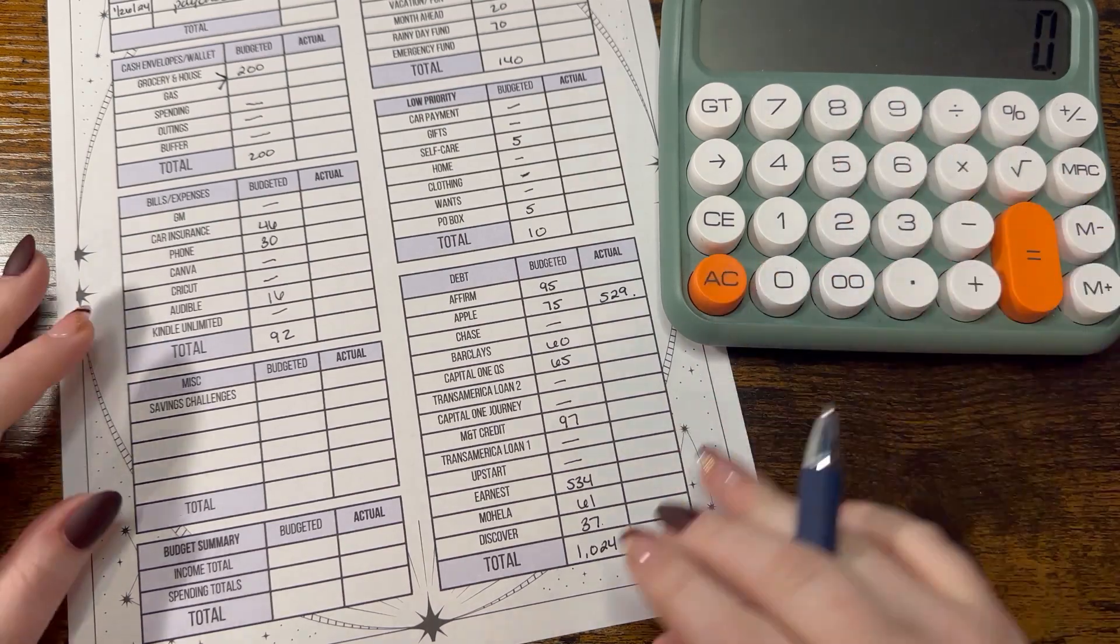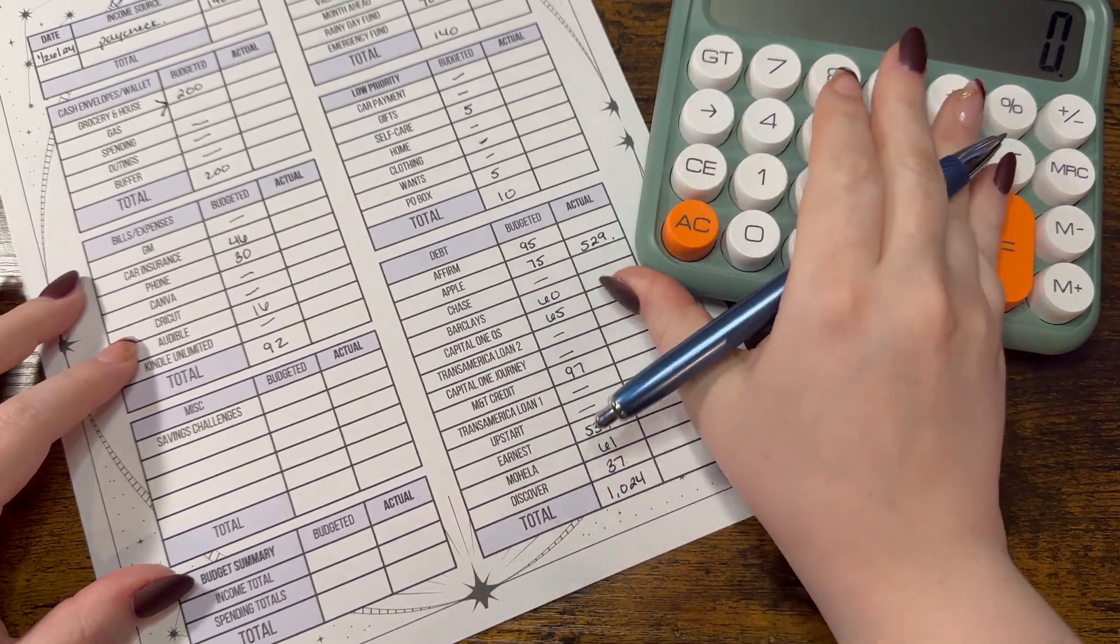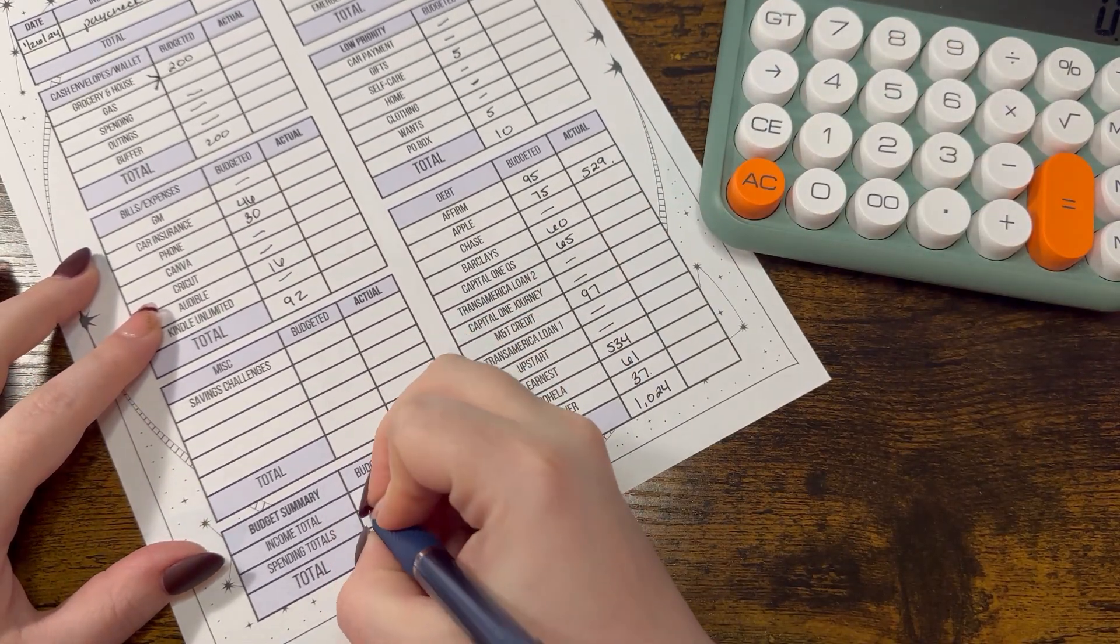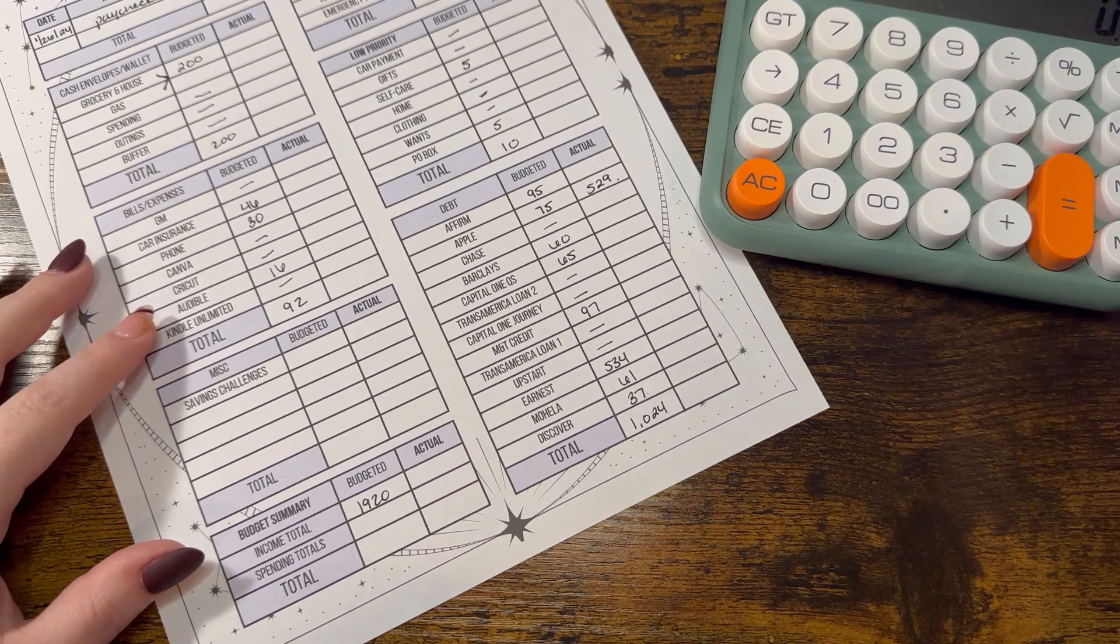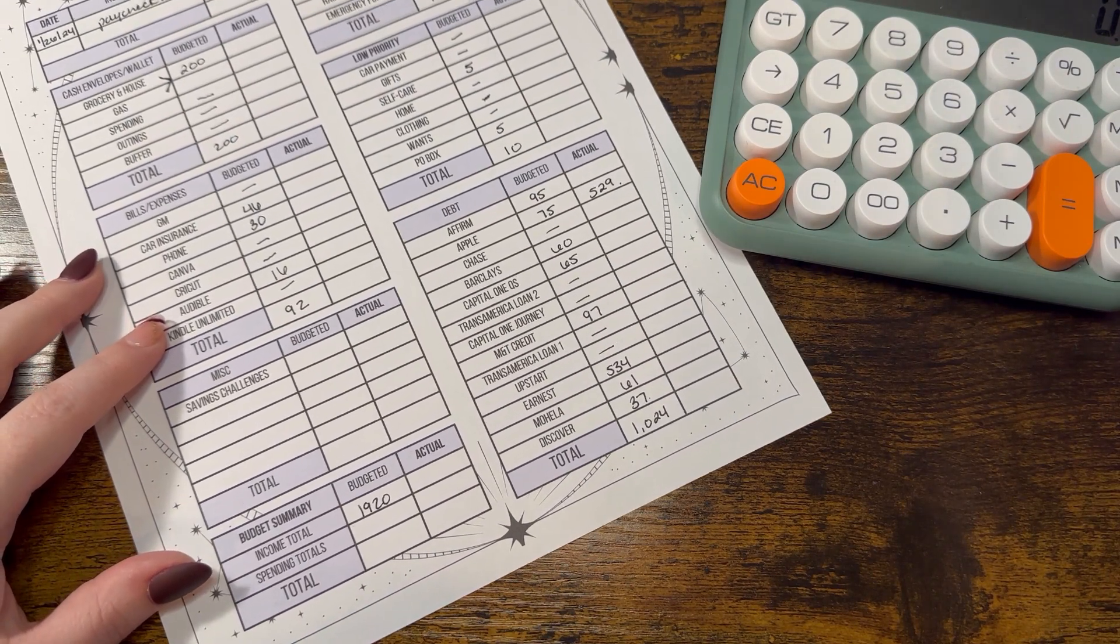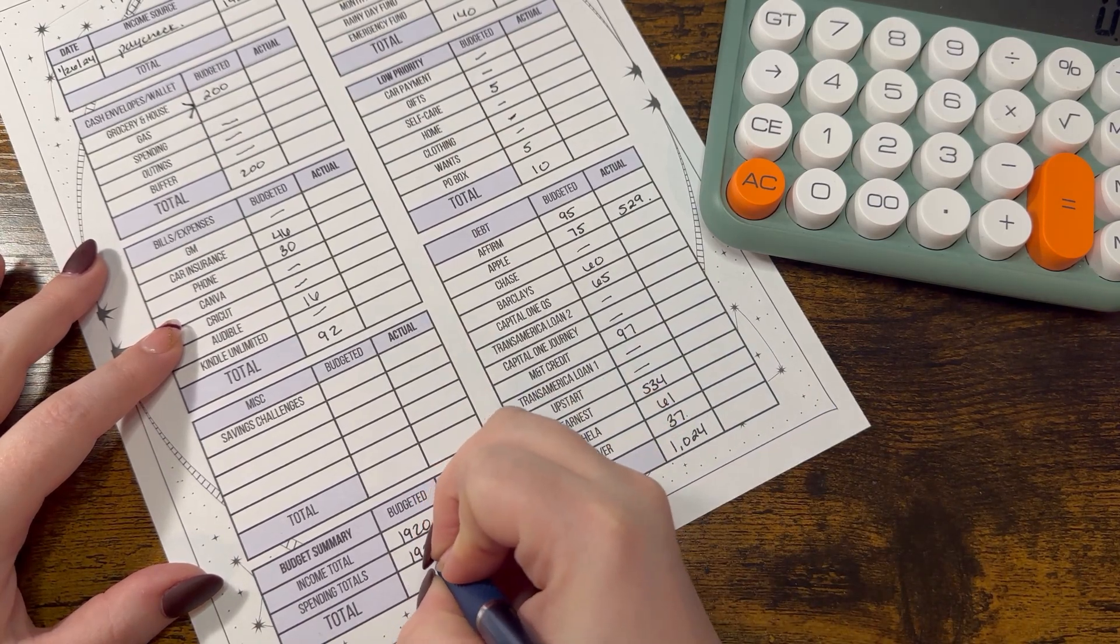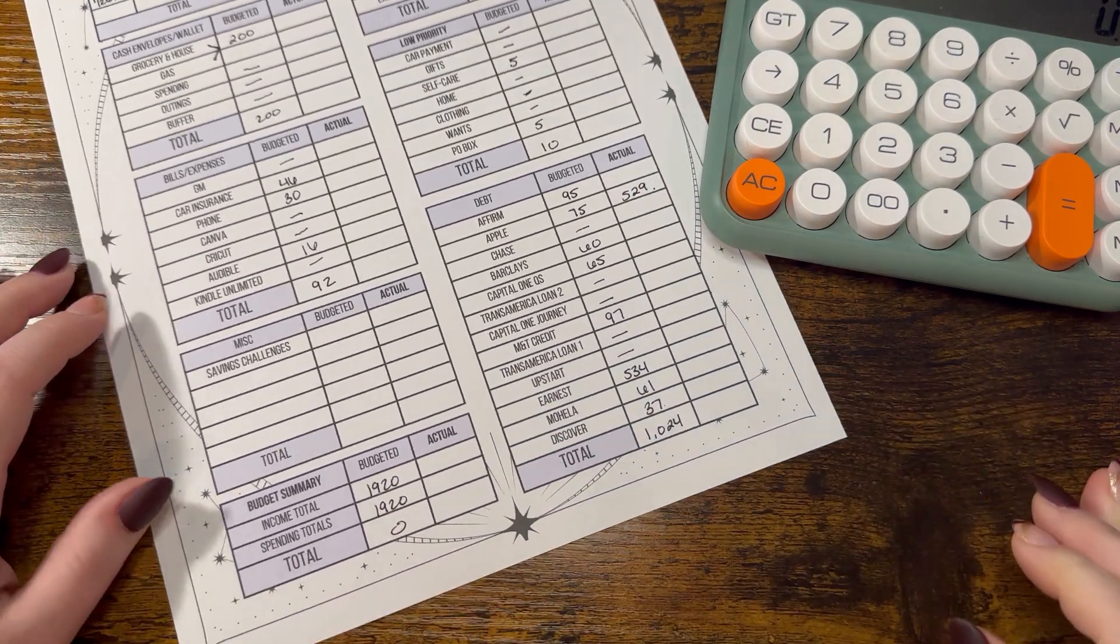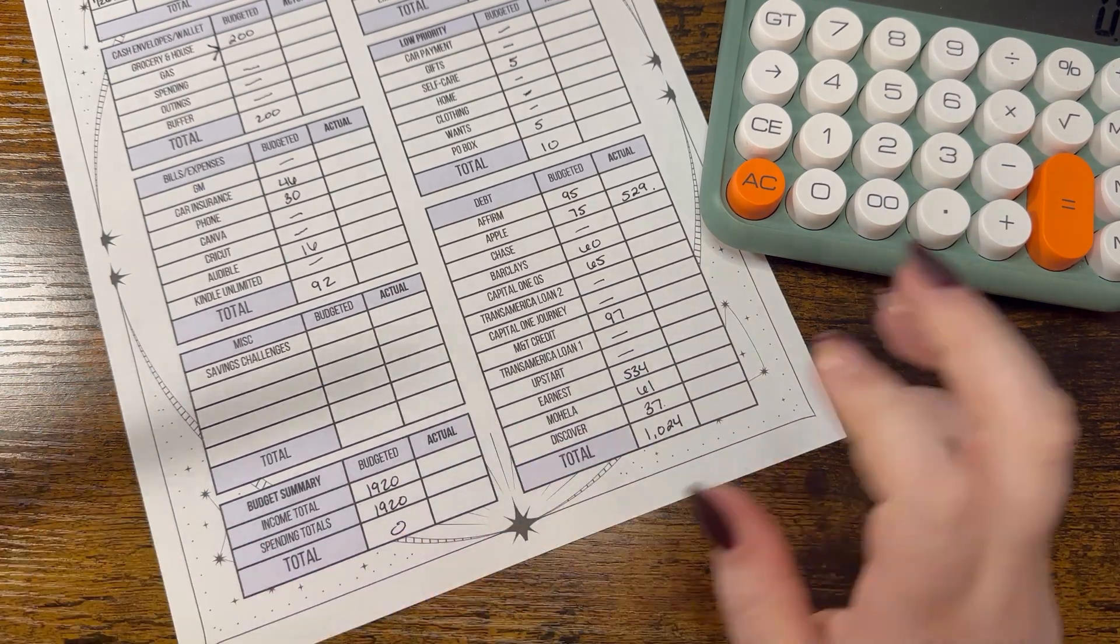So now my income total is $1,920 and my spending totals come to $1,920 so my total is zero because we are doing zero based budgeting.